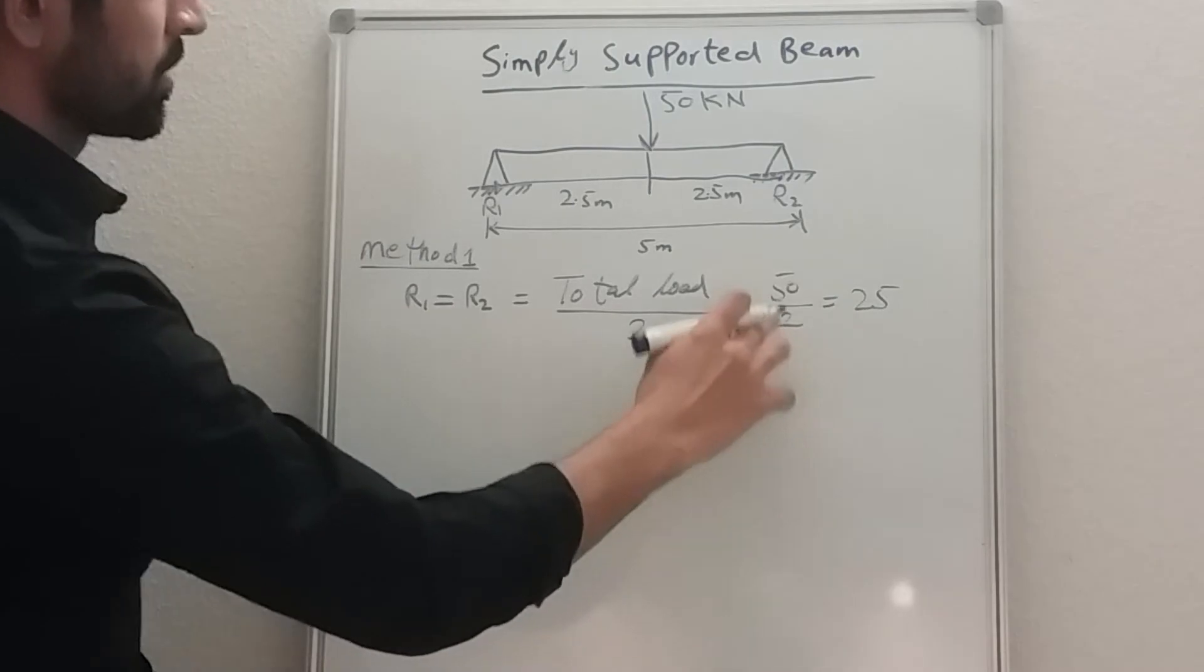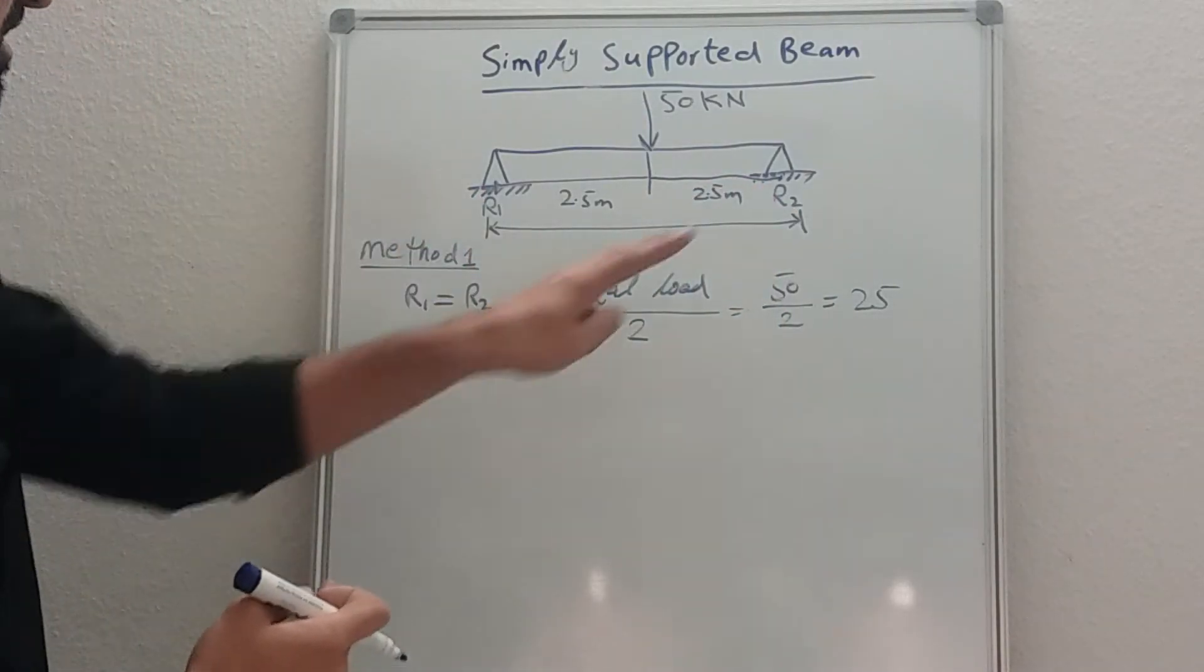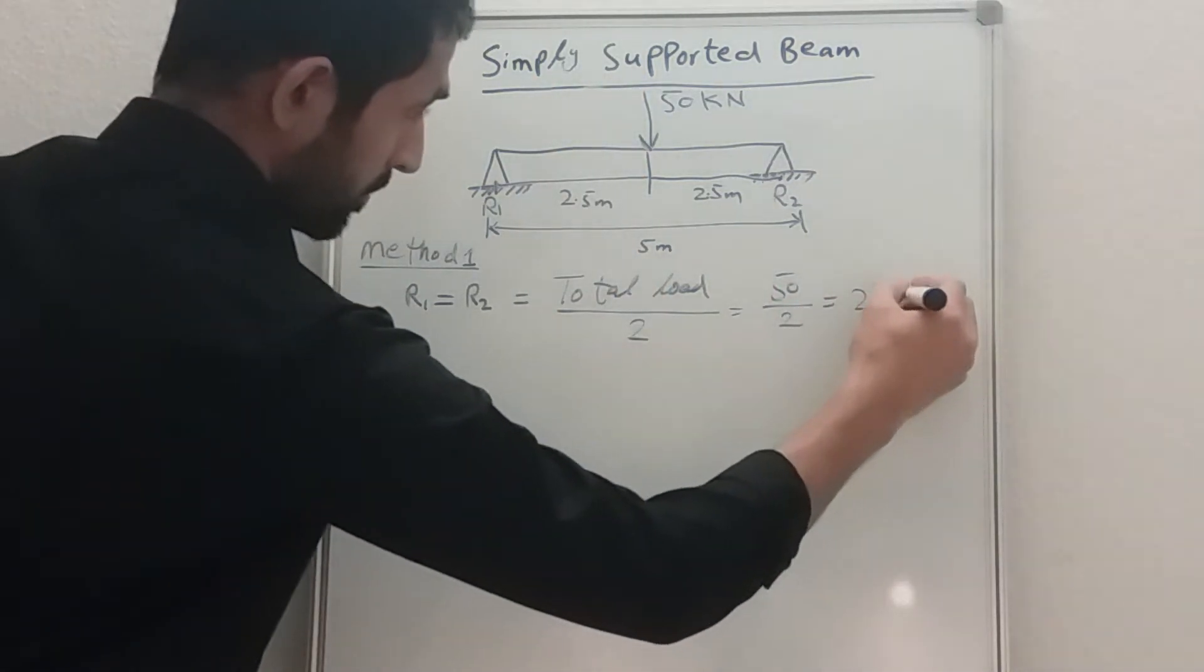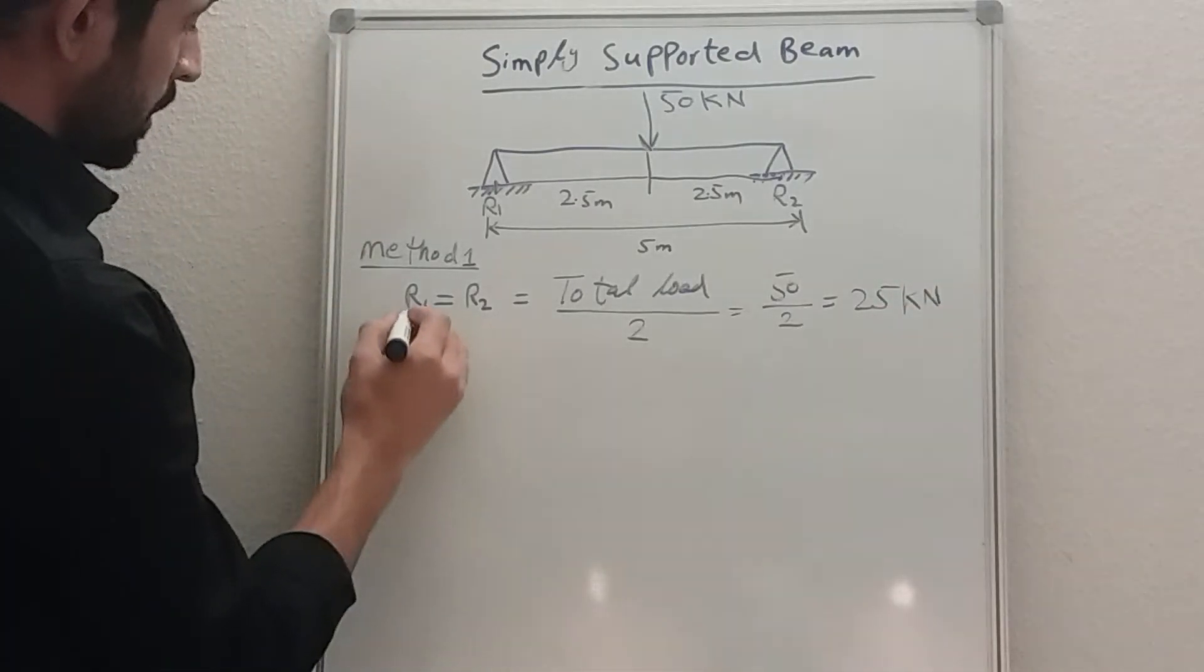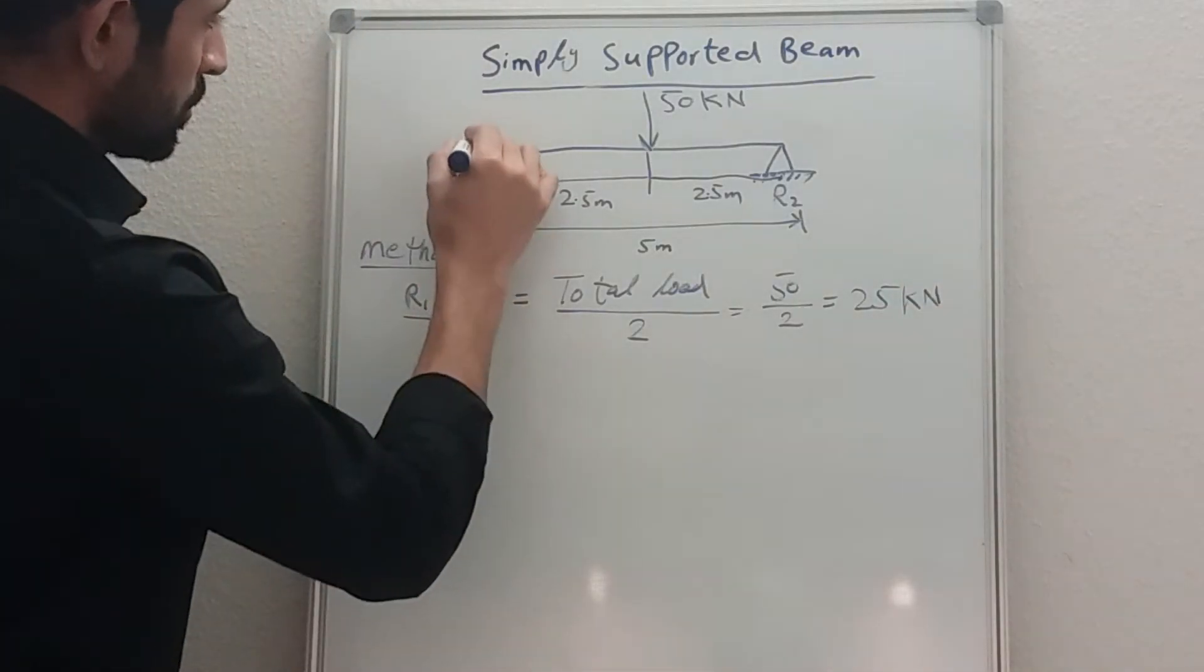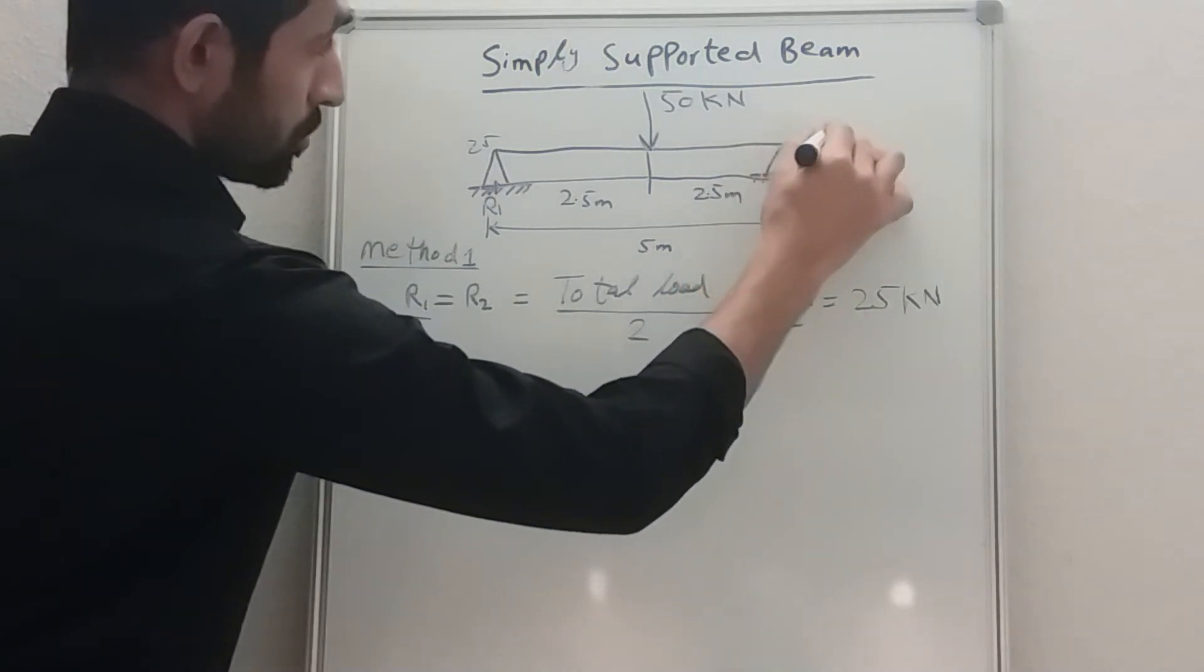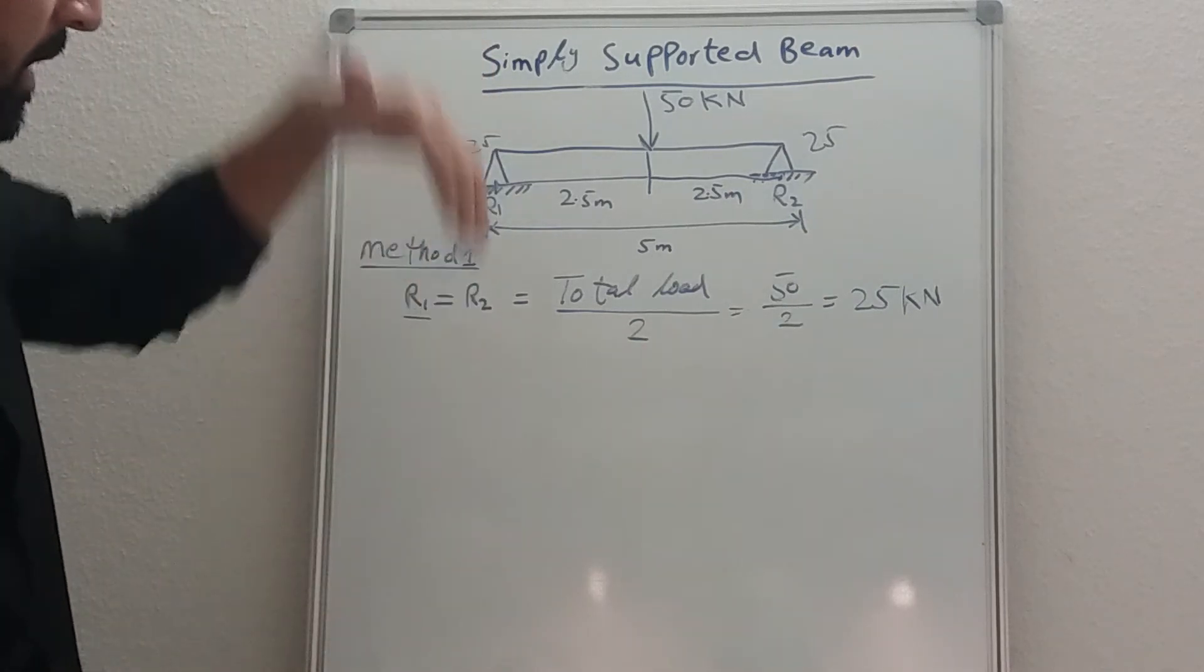We have 50 divided by 2 is equal to 25. Why is 2? Because we have two support reactions. Support reactions are two because going upward, two reactions. So that is 25, so 25 kilonewton.